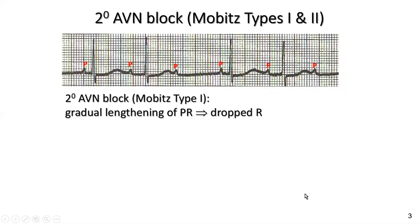Moving on to second degree AV nodal blocks. The first type is Mobitz type one. What happens here is we get a gradual prolongation of the P to R interval — that is, from the atrial contraction to the ventricular contraction — and then a dropped beat. The P to P intervals are constant, but the R waves lengthen out until a beat is dropped at the third beat. You also get a repeating or recurring pattern, which is the key thing to look for to confirm second degree AV nodal block Mobitz type one.